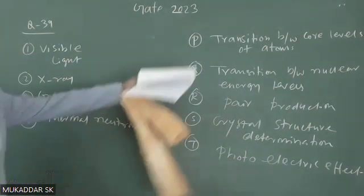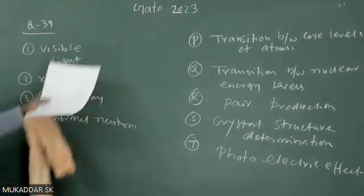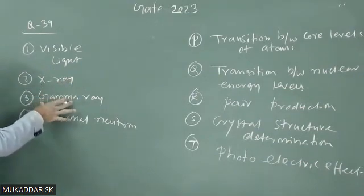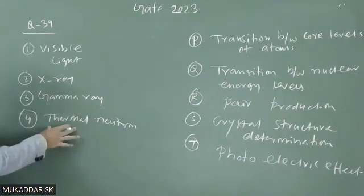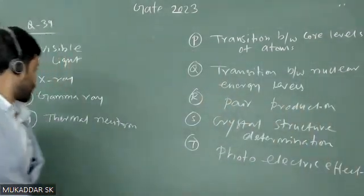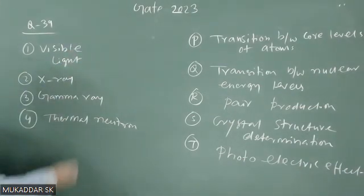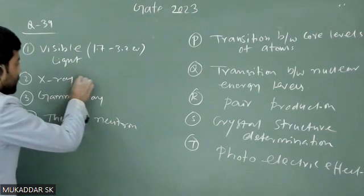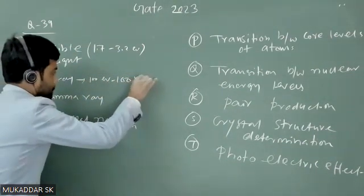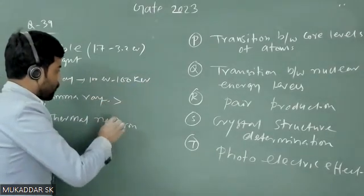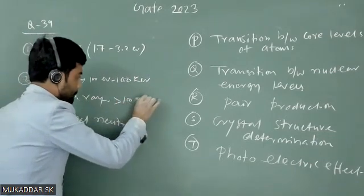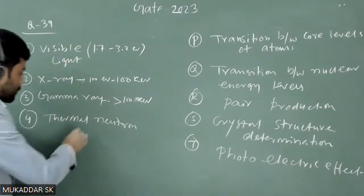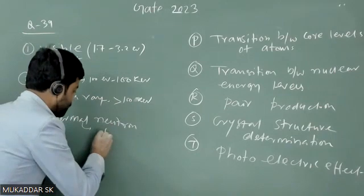To understand these phenomena, we must know the energy range values of different parts of EM radiation and also the thermal energy of thermal neutrons. The energy range of visible light is only 1.7 to 3.2 electron volts. The energy of x-ray is around 100 eV to 100 keV. The energy of gamma ray is more than 100 keV. The energy of a thermal neutron is a few eV.